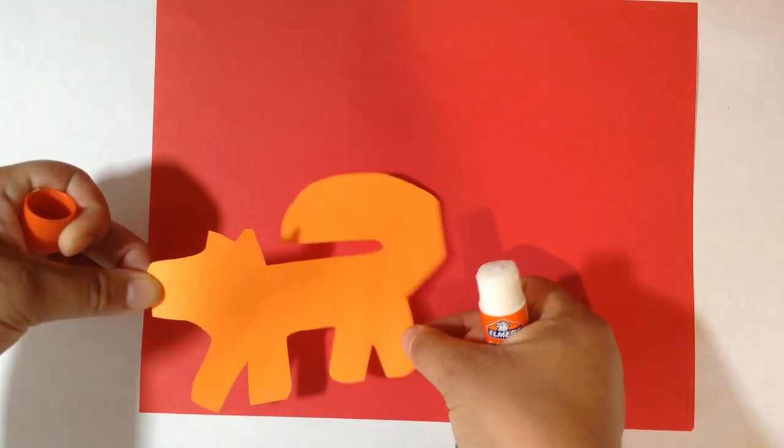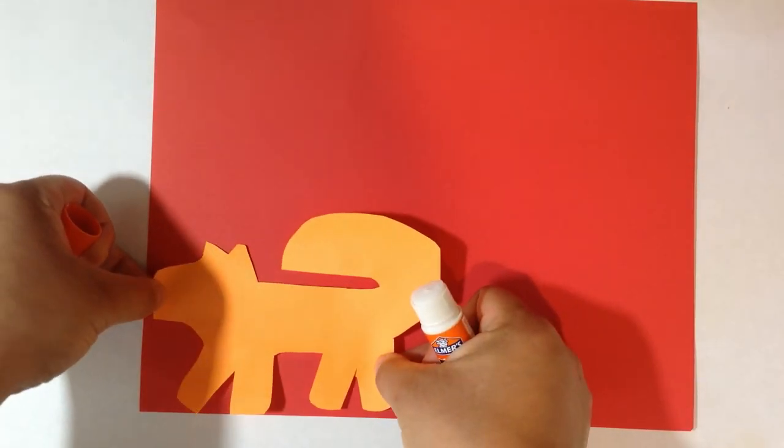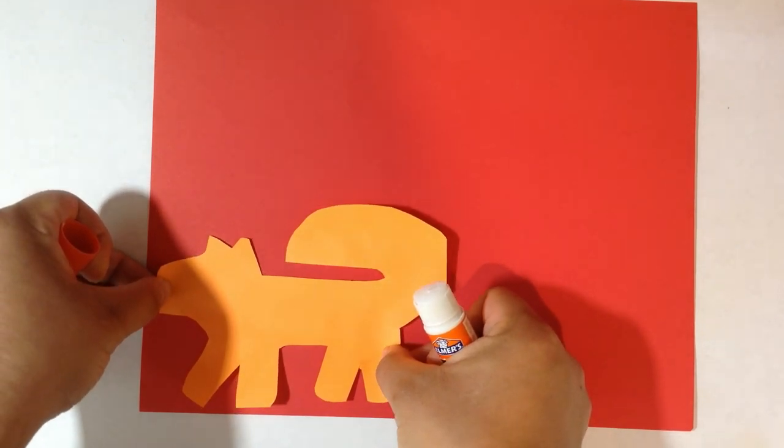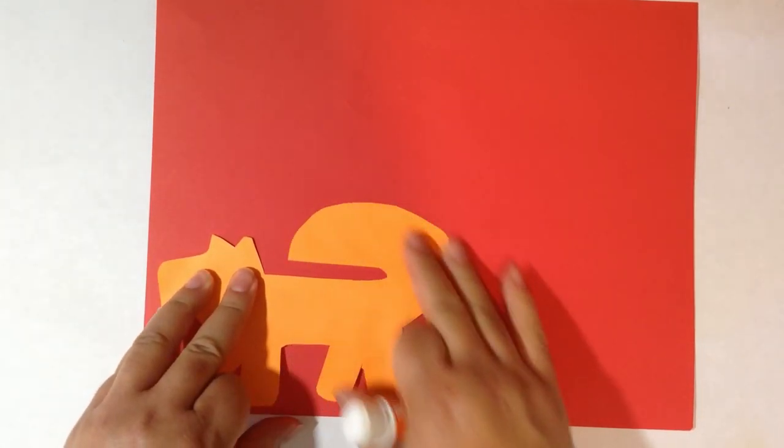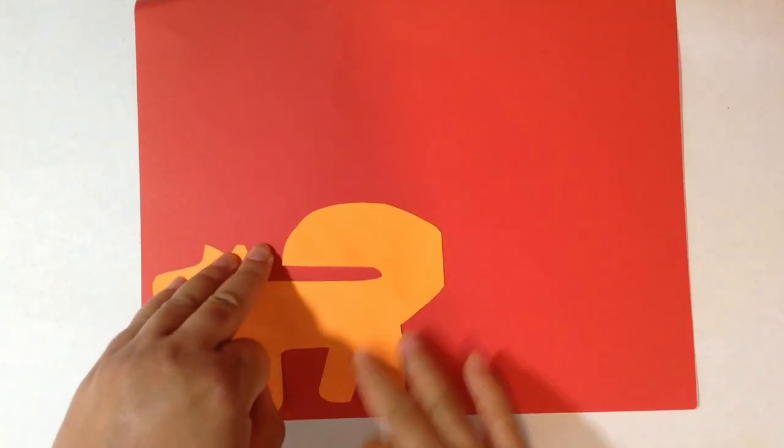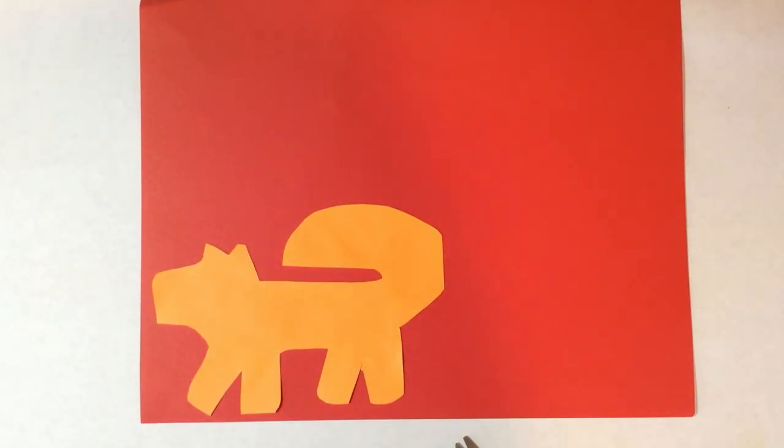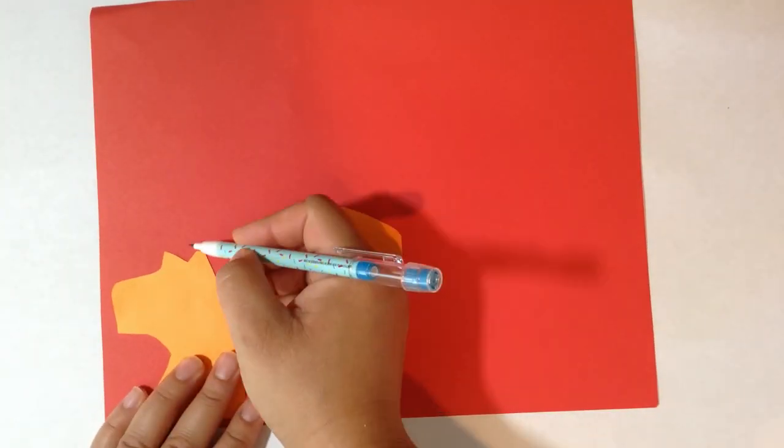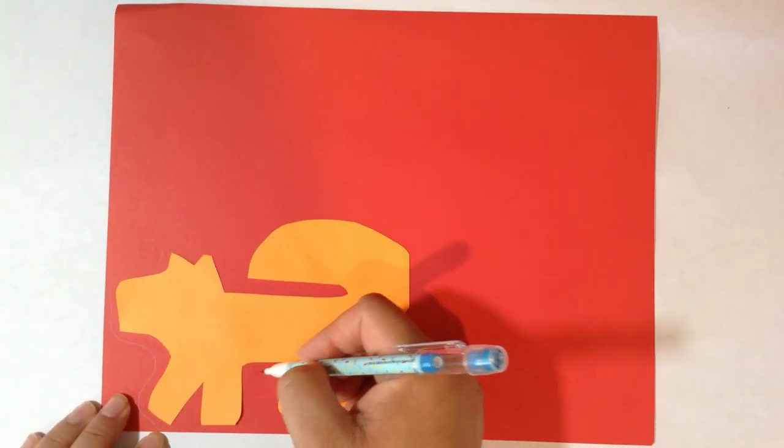Once you are finished cutting, take your animal outline and glue it on another piece of colored paper. Remembering that you need enough room to cut out another border. Take your pencil and create a slightly larger border around it.